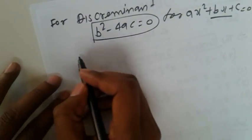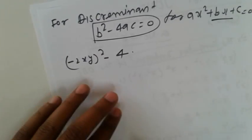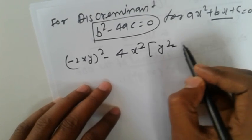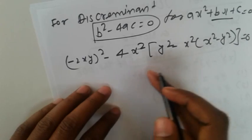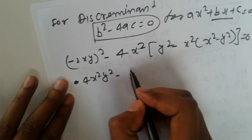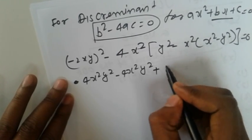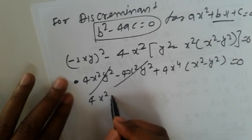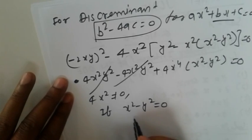So B squared minus 4AC: A is x squared, C is y squared minus x squared, and x squared minus y squared. Those terms cancel. So we get x squared minus y squared equal to 0, which gives y equal to x.